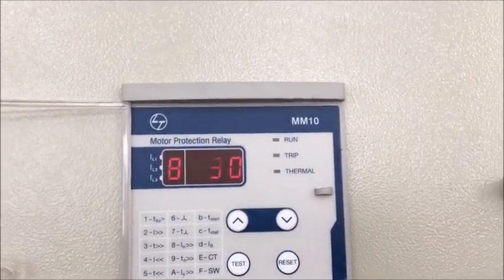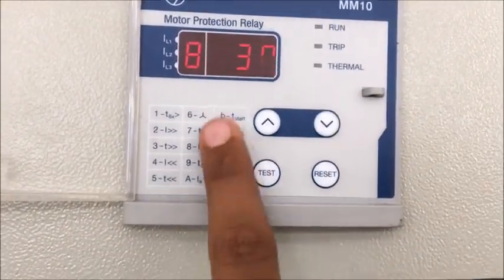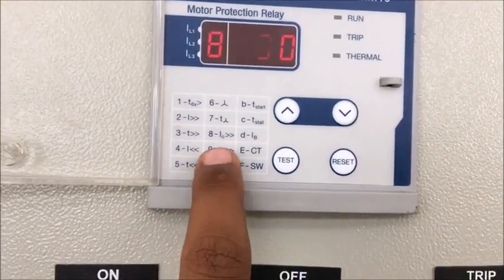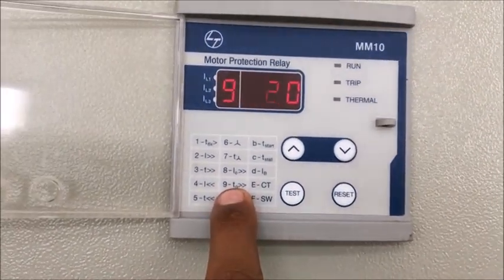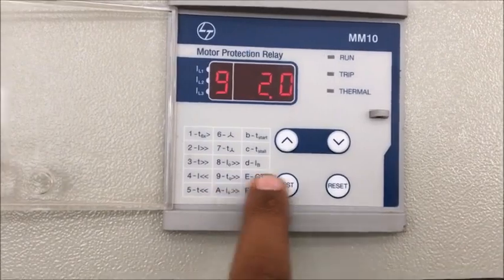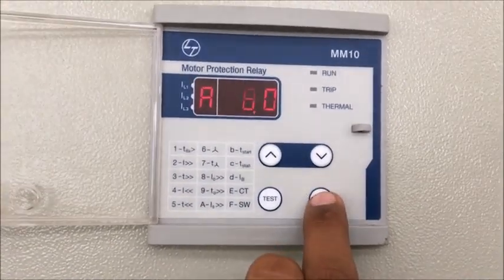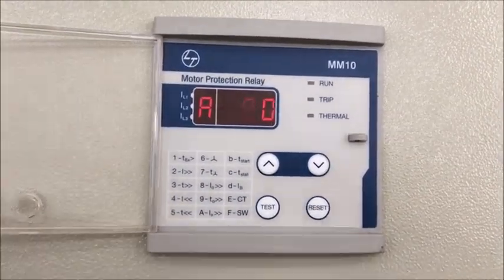Number eight is the earth fault delay time. Number nine is the earth fault delay time. Now we come to A which is prolonged starting or the start rotor time.